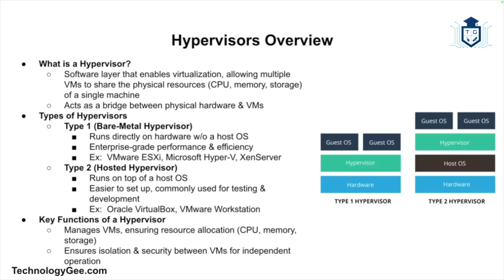Then we have the type two hypervisor, or hosted hypervisor, which runs on top of a host operating system. Examples include Oracle VirtualBox and VMware Workstation. Type two hypervisors are often used for testing and development environments since they are easier to set up, but may have slightly lower performance compared to type one. The hypervisor manages VMs and allocates resources, ensuring each VM operates independently and securely.